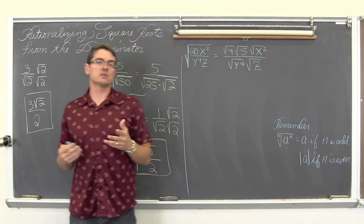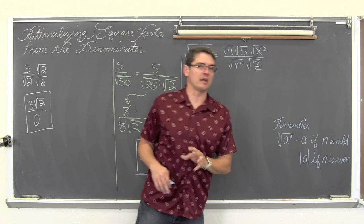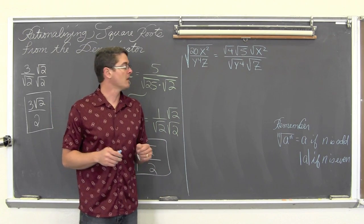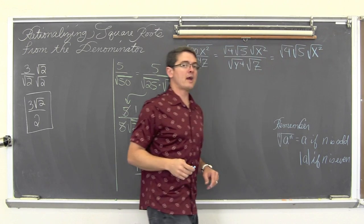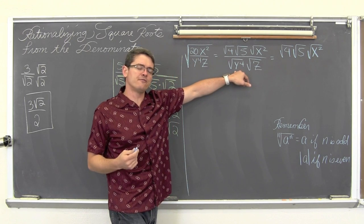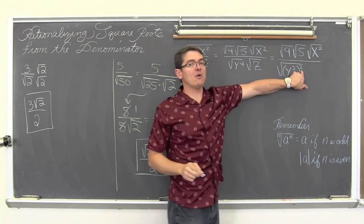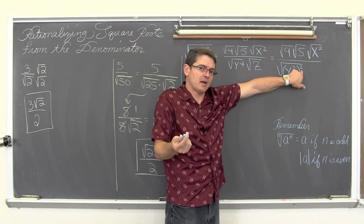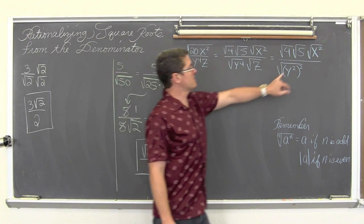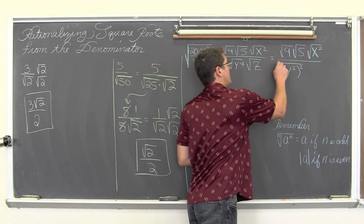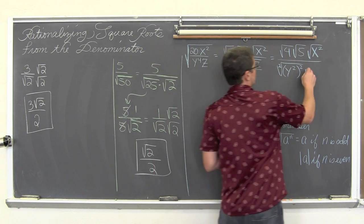The square root of y to the fourth equals y squared, but I am going to rewrite this to match the textbook's rule about absolute values. I will rewrite the expression as square root of 4 times square root of 5 times square root of x squared, and I want to rewrite y to the fourth as y squared squared. This is power to power — two times two equals four — giving me a base with a power of 2 matching the index of 2 in my square root. Then we still have the square root of z.